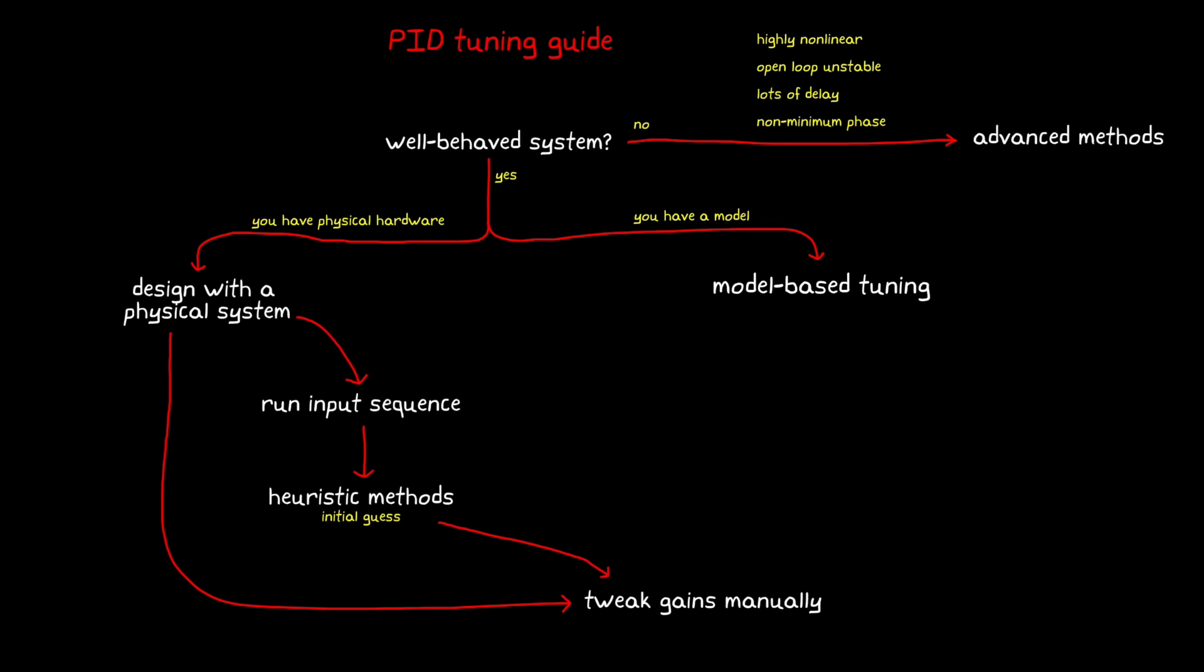Alright, perhaps you only have physical hardware, but you really want to use model-based techniques to tune your controller. In this case, you need to develop a mathematical model yourself. And one way to do this is to derive a model from first principles. This means that you understand the kinematics and dynamics of your system well enough that you can write out the equations of motion directly, and from them, develop a model that closely simulates the physical hardware. This works relatively well for simple systems, but can be very challenging for something complex.